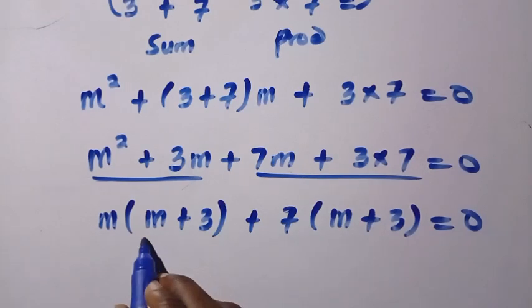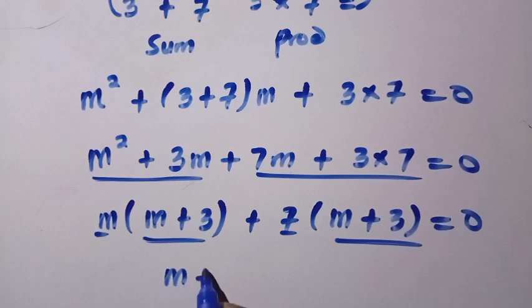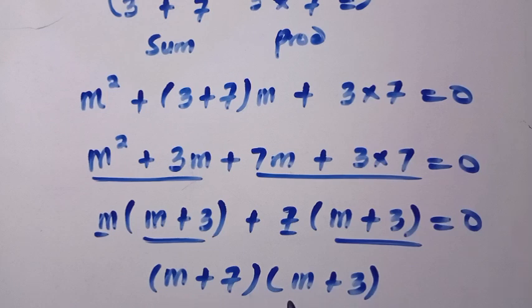So therefore, m plus 3 common, so we combine their coefficients together as m plus 7, then multiply by m plus 3. And this is the result of the quadratic, the factors of the quadratic that we have above.